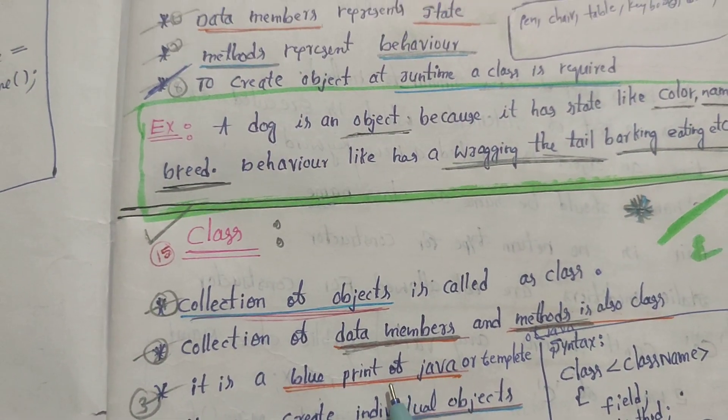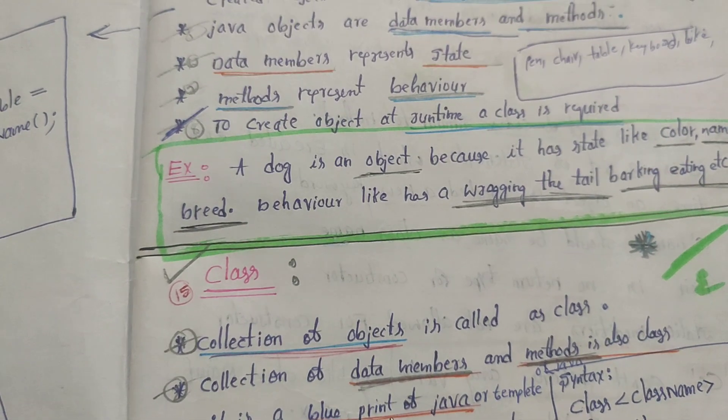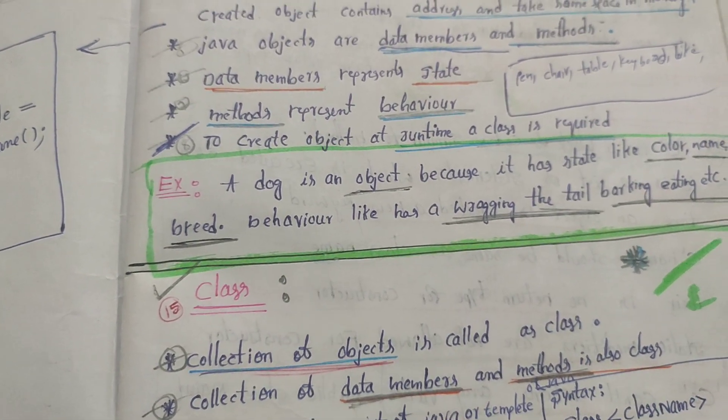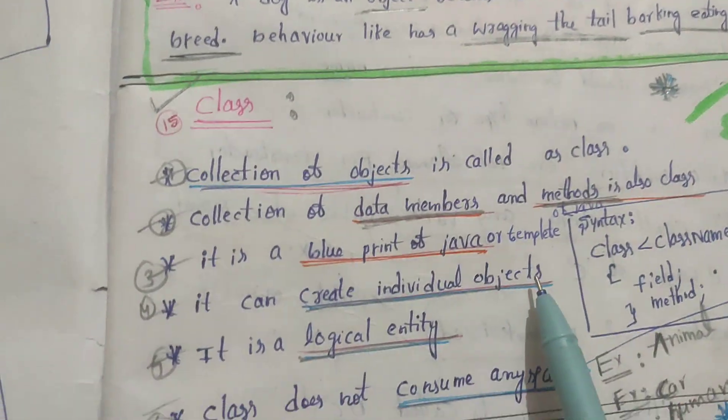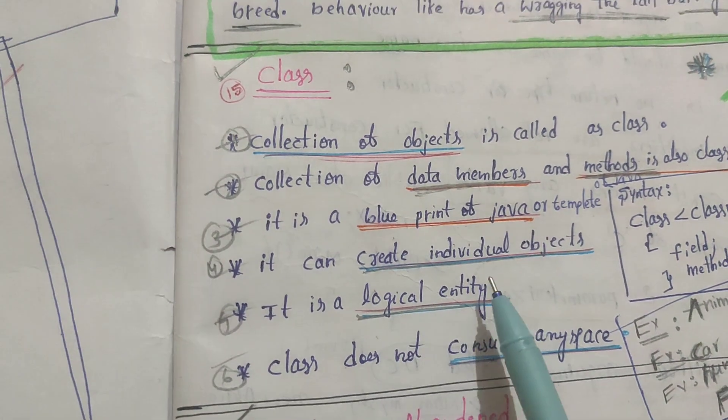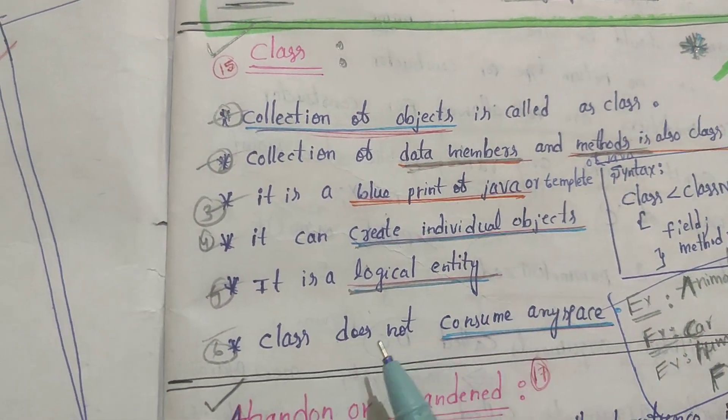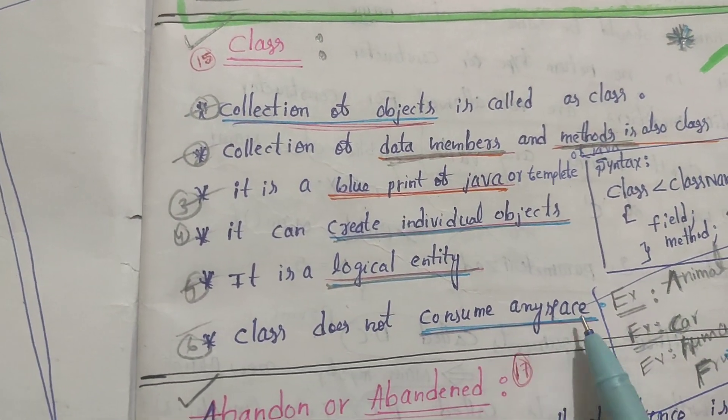Basically, class is a blueprint of Java or template. A class can create individual objects. Class is a logical entity and does not consume any space.